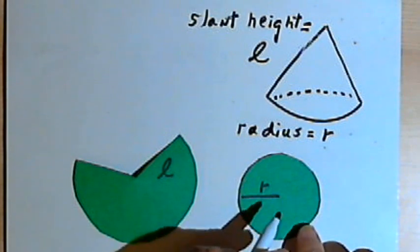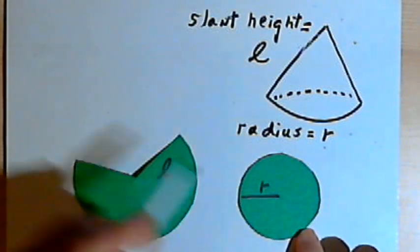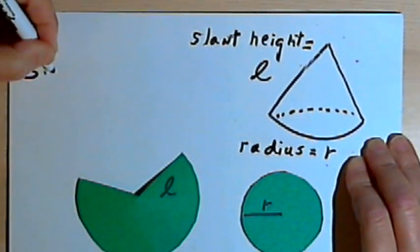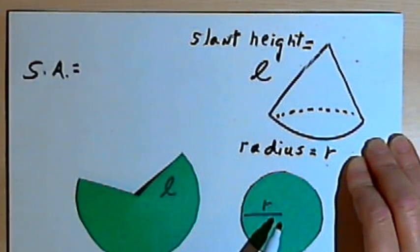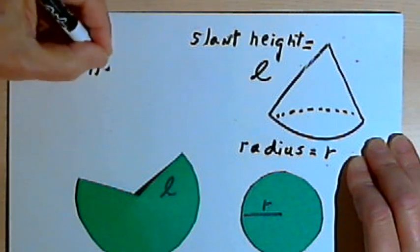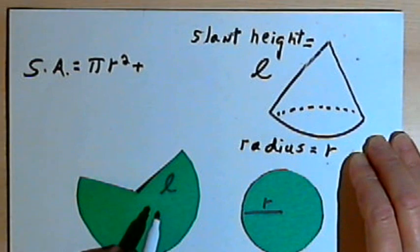So we're looking for the area of each of these two figures. Now the area of the base is going to be fairly easy to find. That's just the area of the circle. So we can start writing the formula. The general formula for the surface area of the cone is going to be the area of that base, which would just be pi r squared, plus the area of the sector.